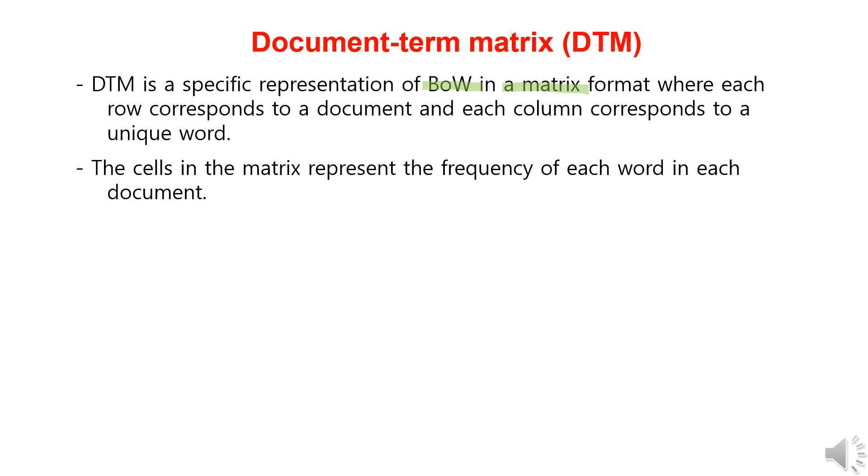Each row represents a document, and each column represents all the words in the corpus. If a particular word appears twice in a document, it is represented as two, and if it doesn't appear, it's represented as zero. This way we can represent the frequency of each word in each document.